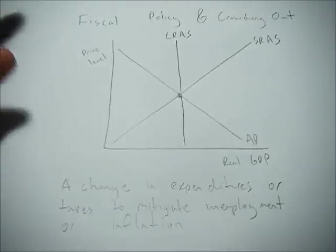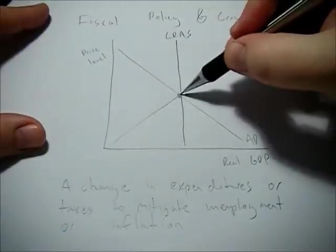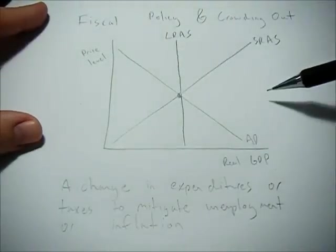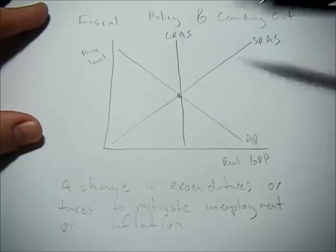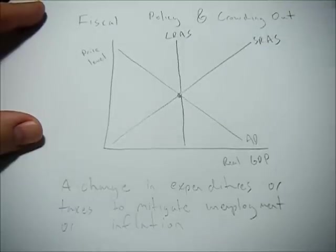So right here we're showing our model in equilibrium. Aggregate demand crosses aggregate supply at the long run aggregate supply level.